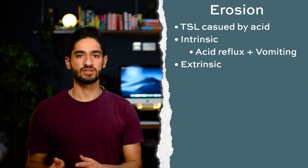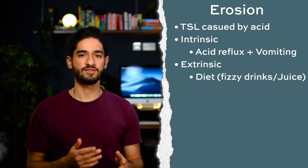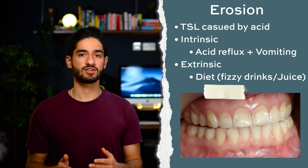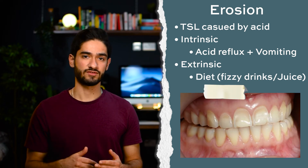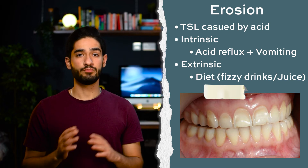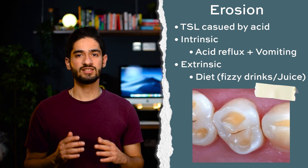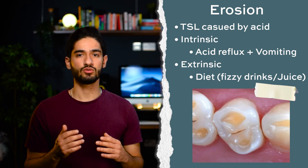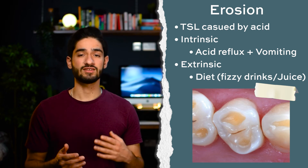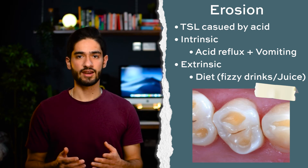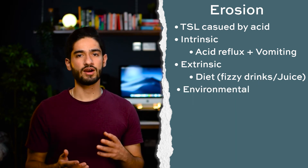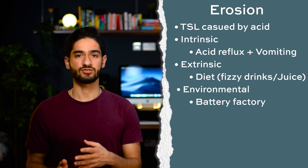Extrinsic sources are mainly diet related, like fizzy drinks and juices. These patients mostly present with tooth surface loss on the labial surfaces of incisors and the occlusal surfaces of molars. In both types you might see bowl-like wear facets, sometimes called a ring of enamel, and this happens because the dentine wears away at a faster rate than the enamel.